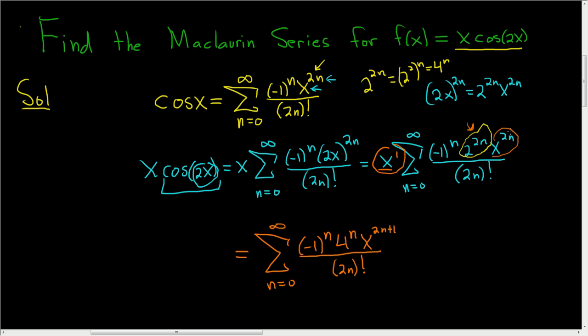Remember, x^1 times x^(2n) — you just add the exponents to get 2n+1. And that's it. I hope this example helps.